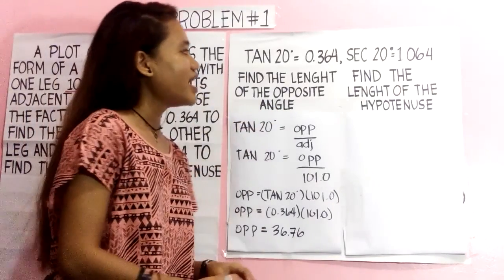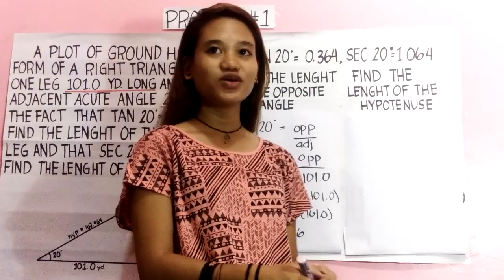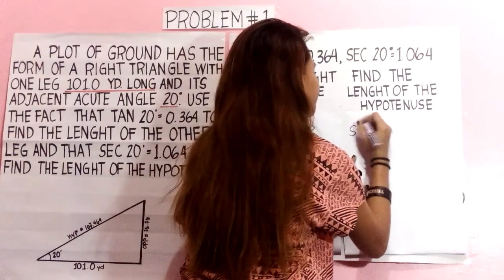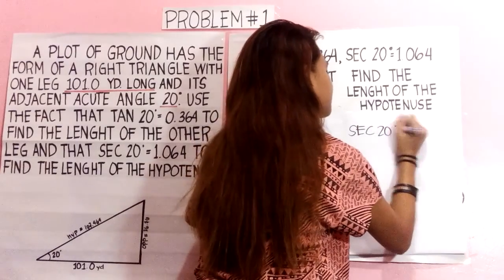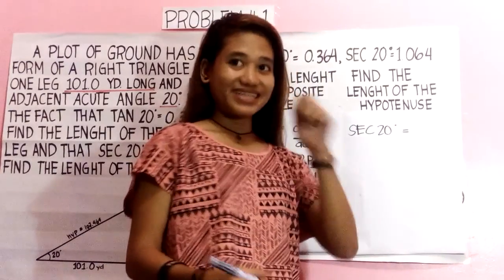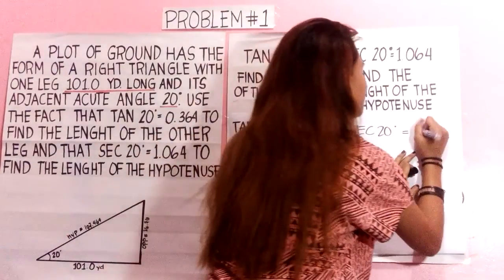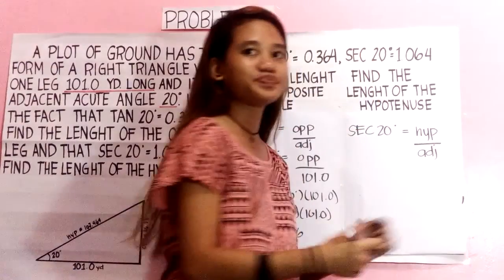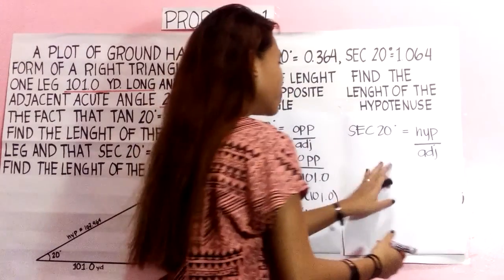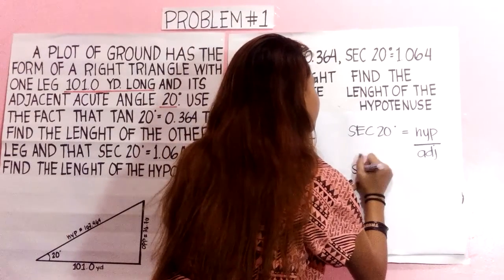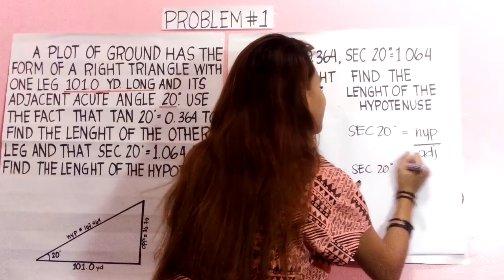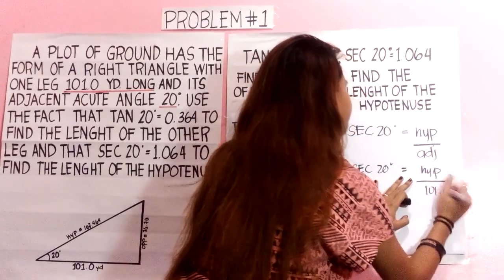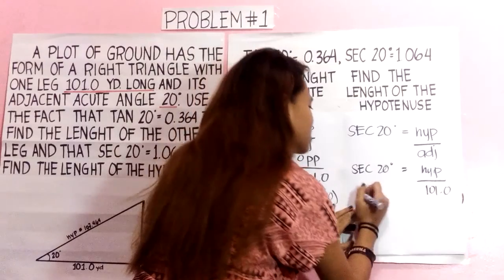Next, to find the length of the hypotenuse, we use sec 20 degrees, which is hypotenuse over adjacent. We will substitute the value of the adjacent, which is 101.0, then cross multiply.